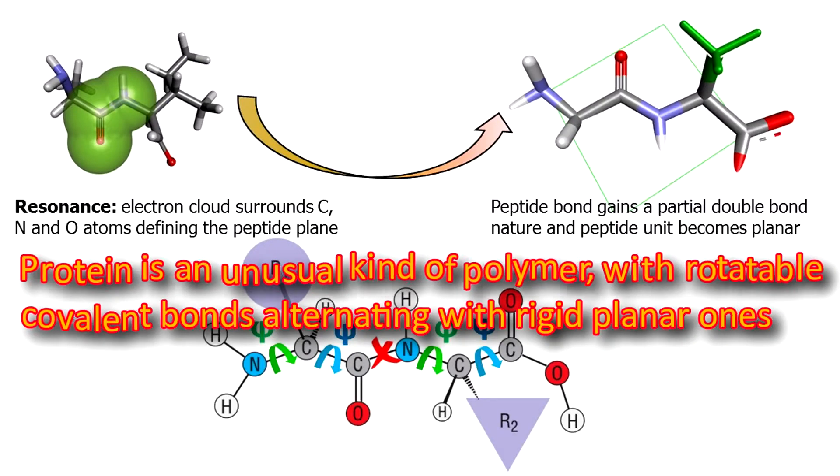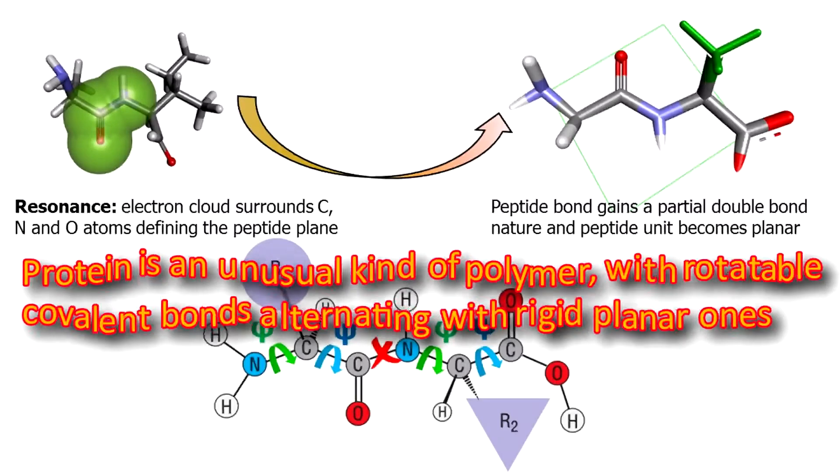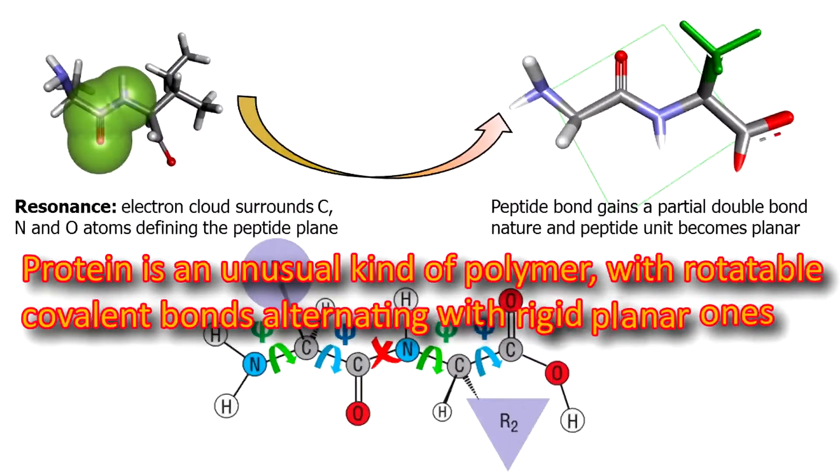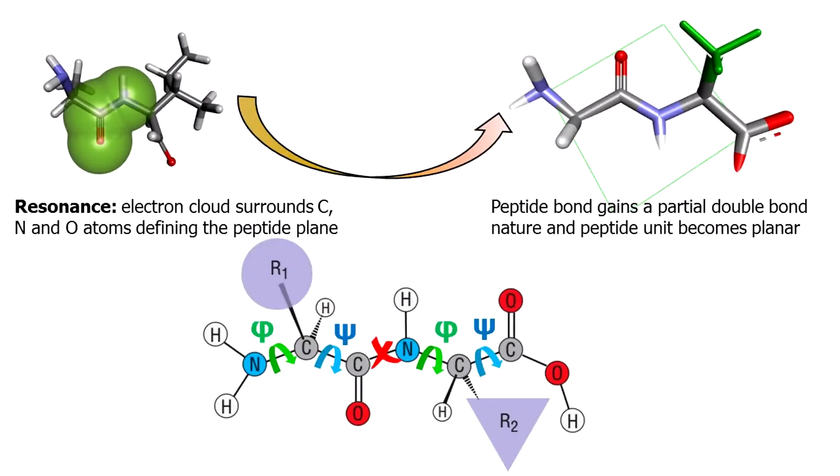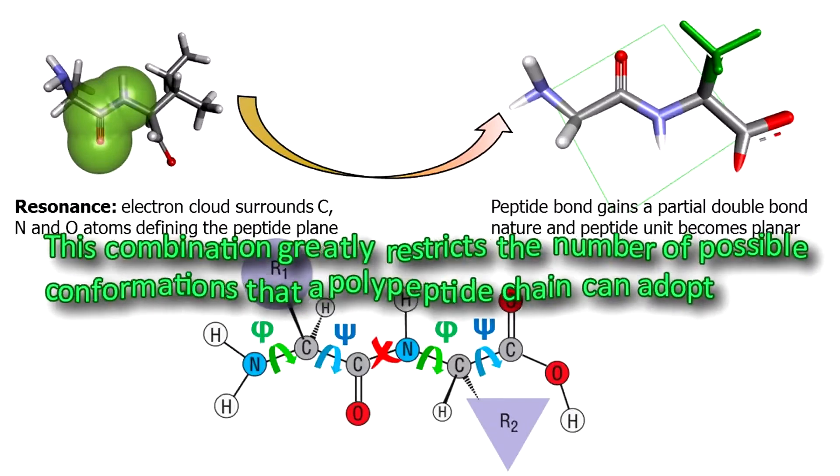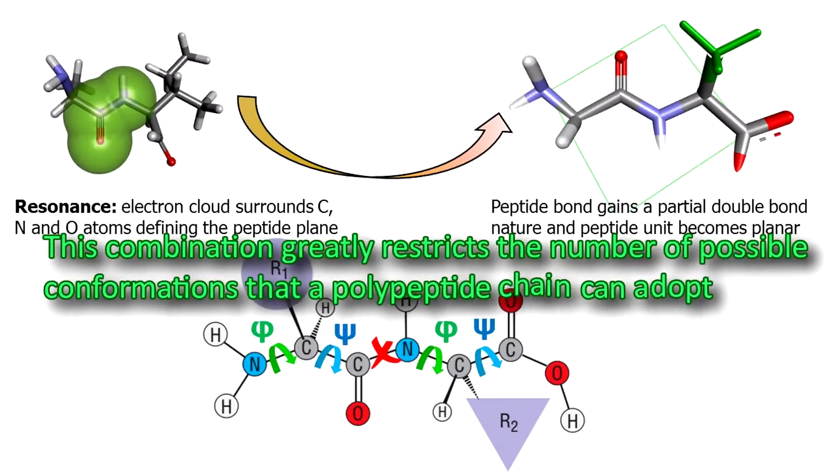Thus, you see guys, a protein is an unusual kind of polymer with rotatable covalent bonds alternating with rigid planar ones. The combination greatly restricts the number of possible conformations that a polypeptide chain can adapt.